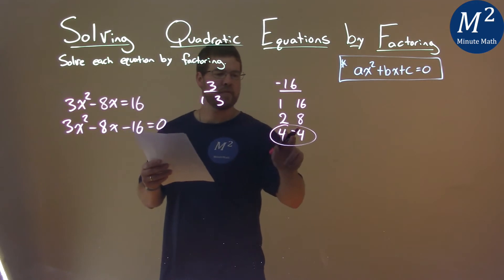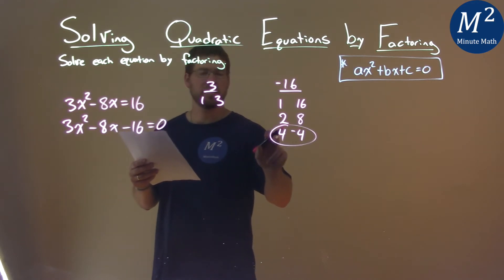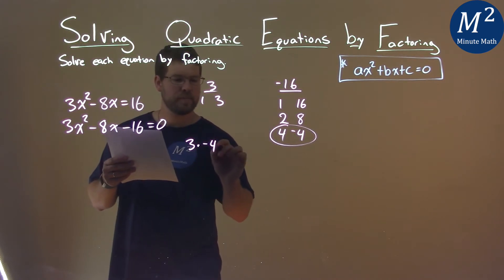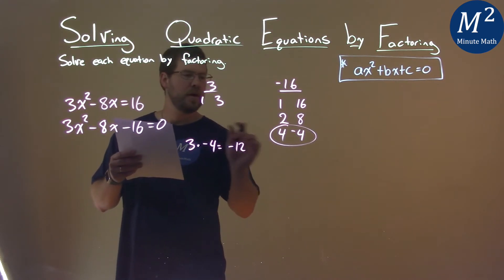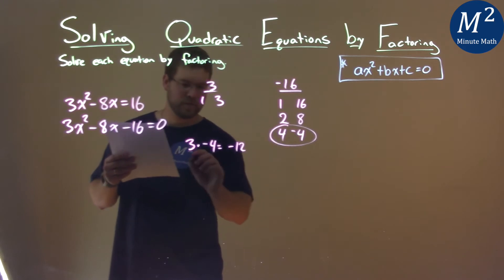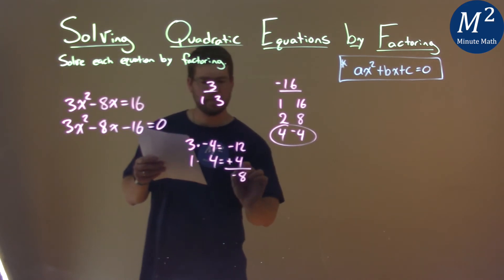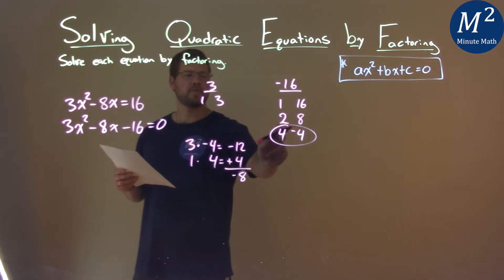3 times a negative 4 is a negative 12, plus 4 is a negative 8. So let's see that. 3 times a negative 4 equals a negative 12, and then 1 times the other 4, really is what happens. 1 times 4 equals a positive 4. Add them together, and we get a negative 8. So our two numbers are 4 and negative 4.